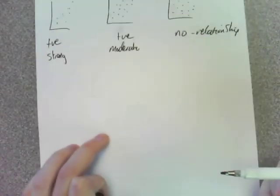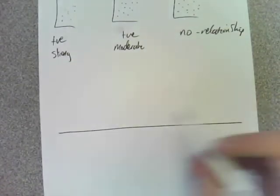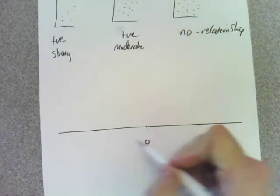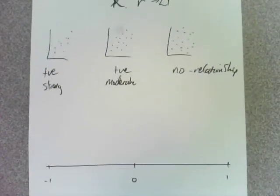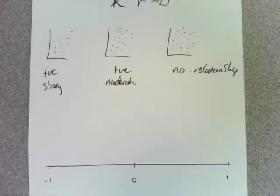So you guys have got a pretty good understanding of what that means. All that this R thing does is put a number to it. And this first exercise, exercise 2f, is all just about guessing. As stupid as that might sound, all you have to do is say it's about this, somewhere on this scale.